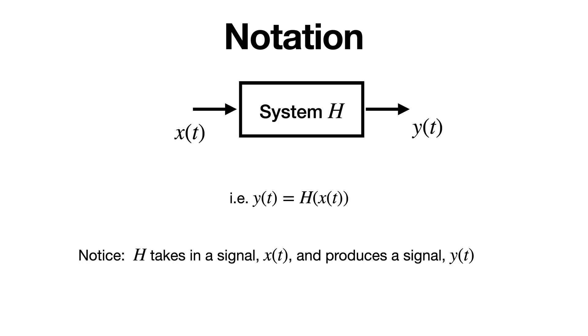One point about notation is we often use lowercase letters like x and y to represent signals and capital letters, especially the letter h, to represent systems. With this notation, we can write the output y of t of a system h acting on an input x as y of t equals h of x of t. Notice how our system h takes in a signal x and produces an output signal y. Our signals x and y themselves take on a time value and produce an output value. You can think of systems almost like metafunctions. They're functions that take in functions and return other functions.